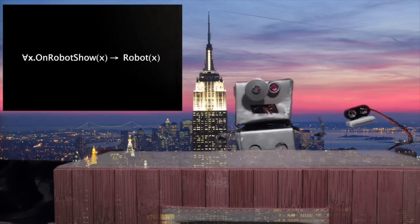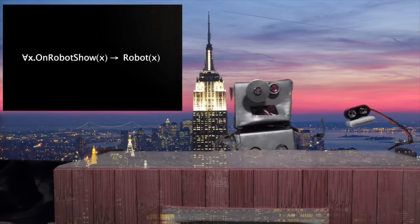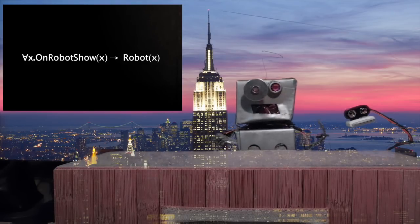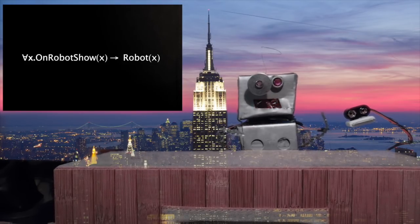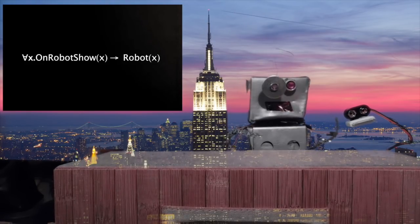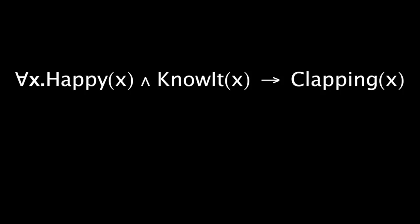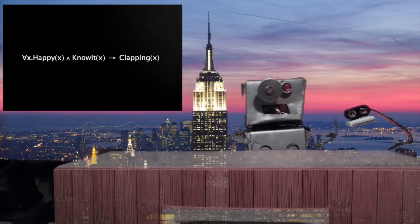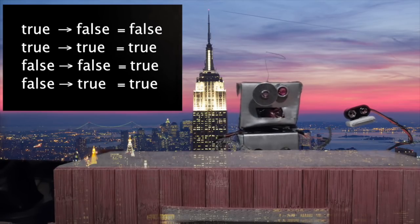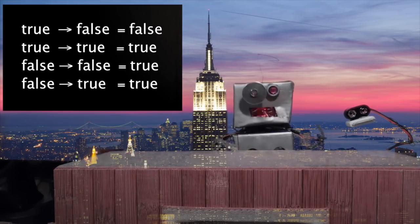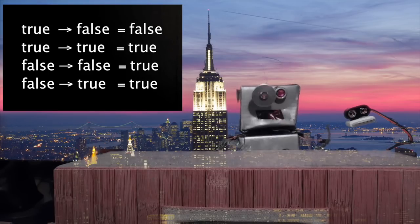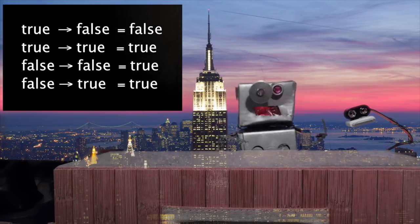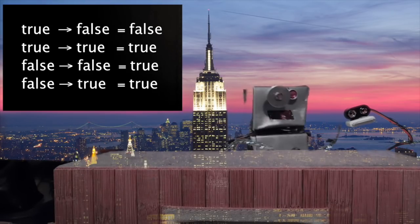So it says for all X here, if you're on the robot show, that implies you're a robot, right? So if you're not on the show, we won't even check that you're a robot. We'll just assume, you know, things are good and the statement holds. And here's another one happy and you know it, you're probably clapping. That implies you're clapping. So that's a good one. And so here's the truth table here. So it kind of acts like a nested if, right? If the first part is true, we're actually going to check the second part. Otherwise we're not.